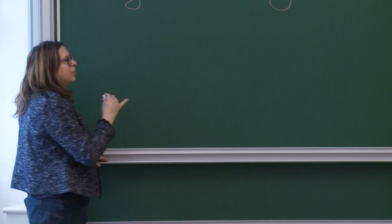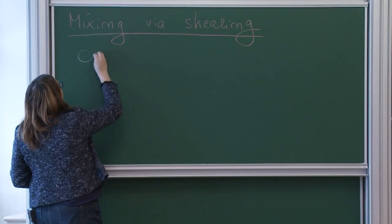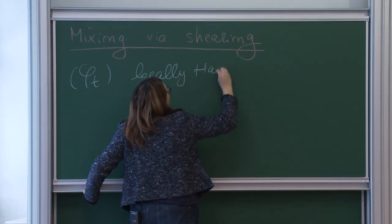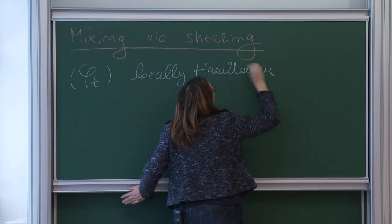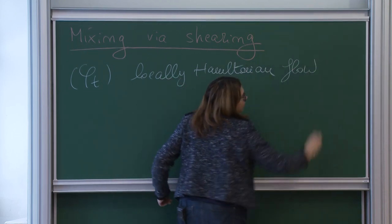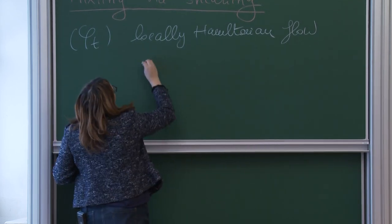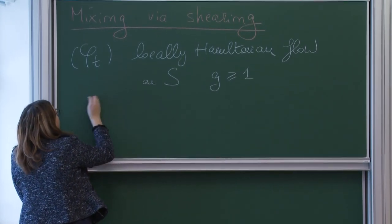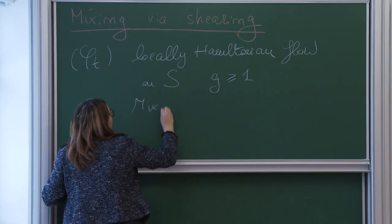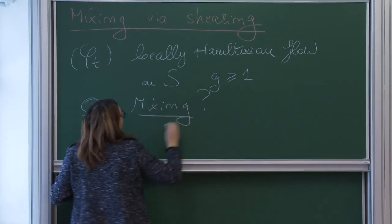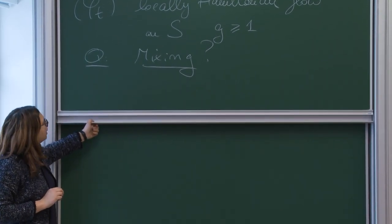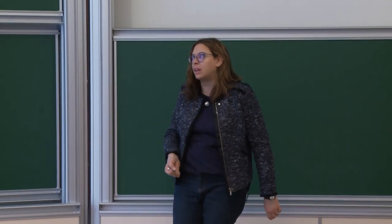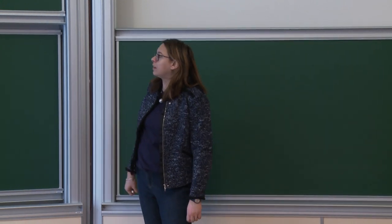Before I start with the background notions, let me recall what we are interested in. We are studying locally Hamiltonian flows, or smooth area-preserving flows, preserving a smooth area form on a surface of genus at least one. We are interested in mixing. Last time I spent a lot of time defining Hamiltonian flows and defining mixing. To actually work with flows, we will need a very concrete representation as special flows over interval exchange maps.